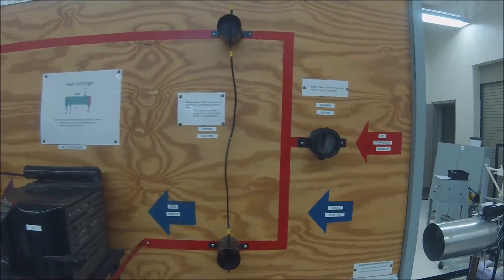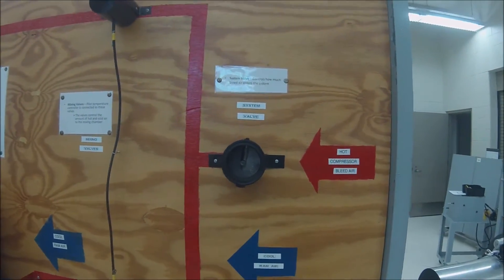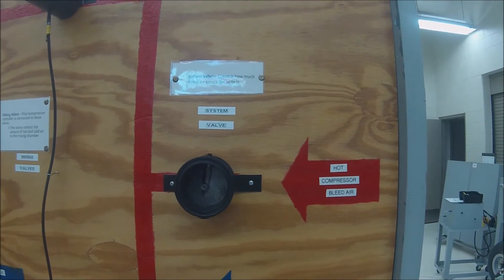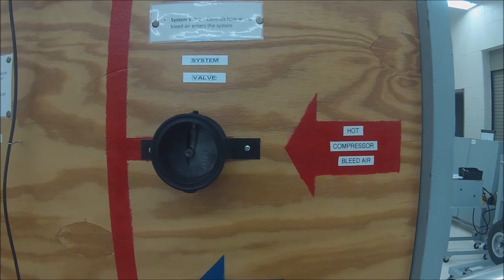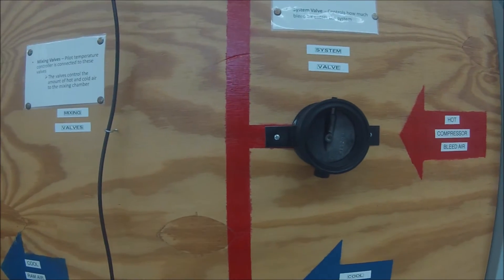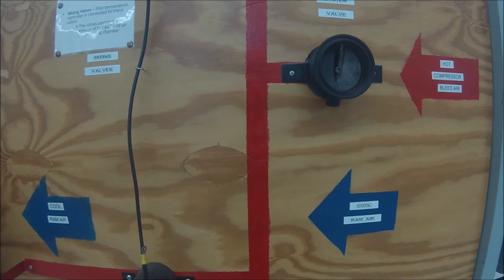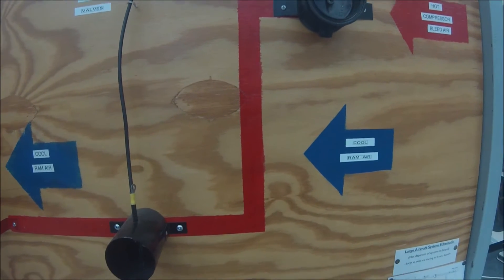First, outside air enters the engine with the aid of a system that controls how much bleed air enters, also known as the system valve. The low density air gets compressed. Hot compressed air is transported via ducts to the air conditioning packs.